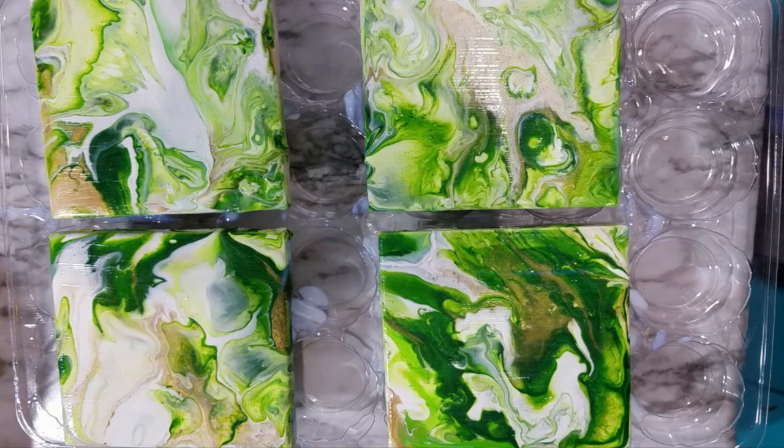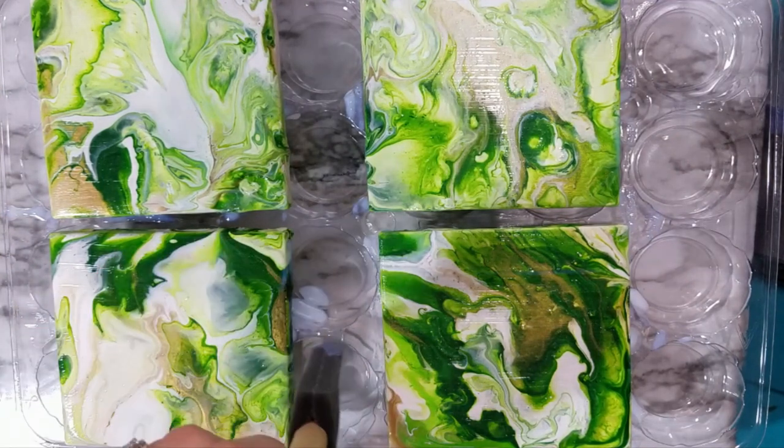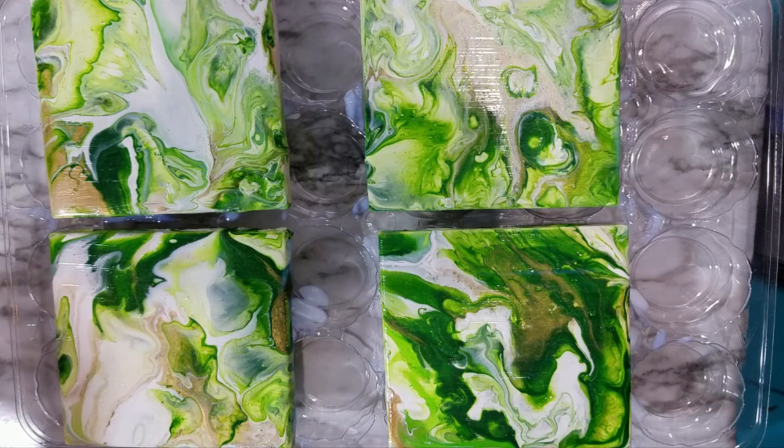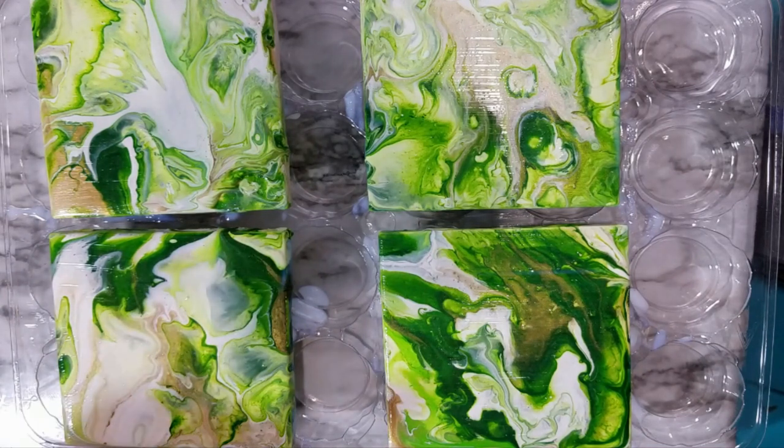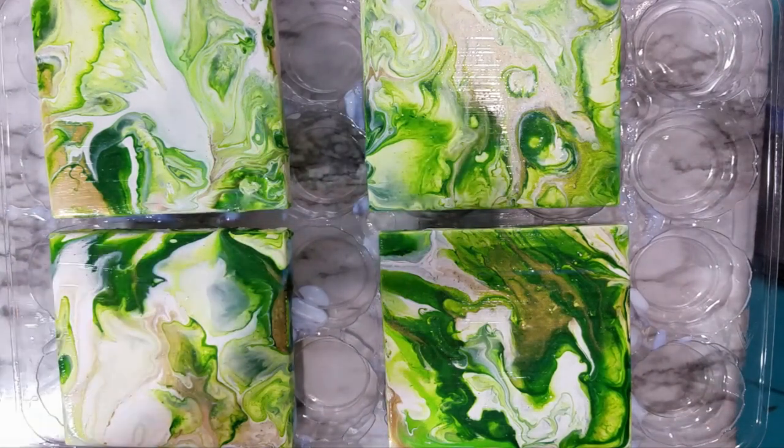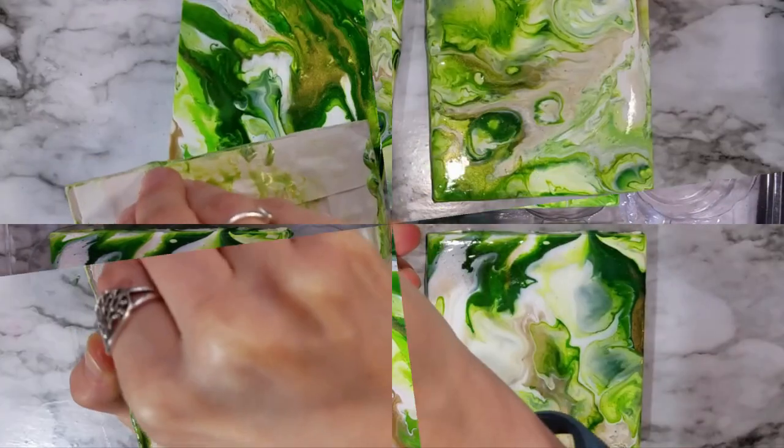Okay, so I'm just gonna let this dry before I put any more layers on. And then once I'm done doing this I will be putting the cork bottoms on them so that they can be used as coasters. I'll be back when these are dry.